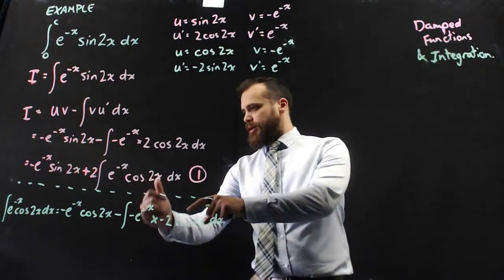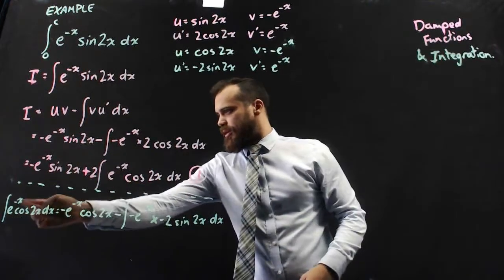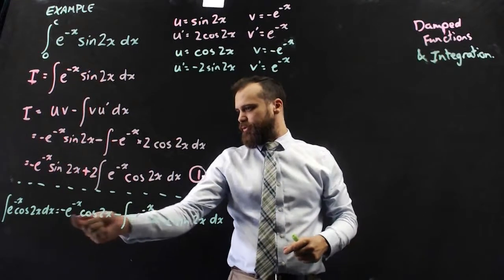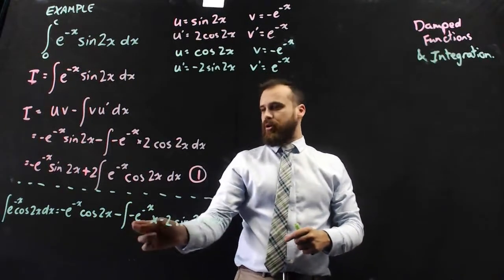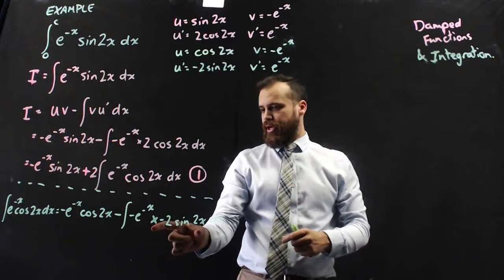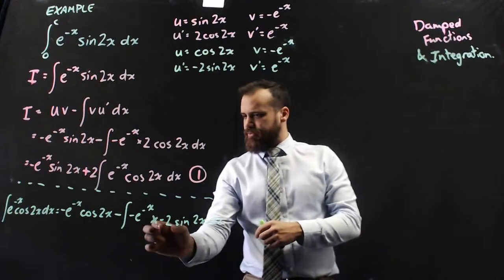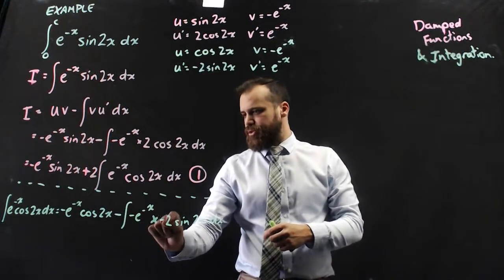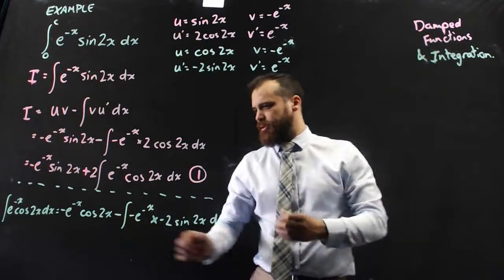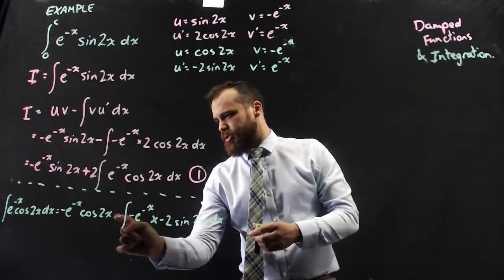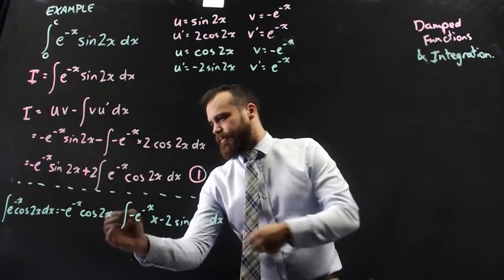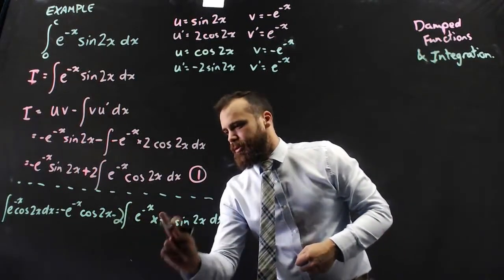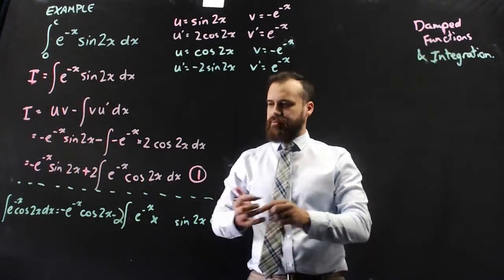So the integral of e to the negative x cos 2x with respect to x equals uv minus the integral of v u dash. We've got a negative 2 and a negative 1 here, so we can bring out negative 2 times negative 1, which is positive 2. That negative times positive 2 is just negative 2. So we neaten that up.